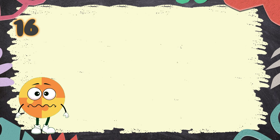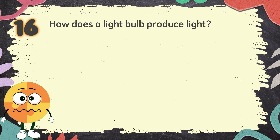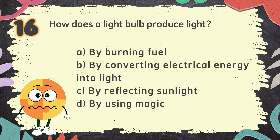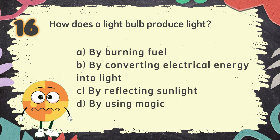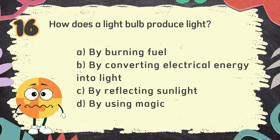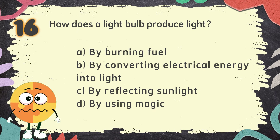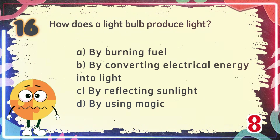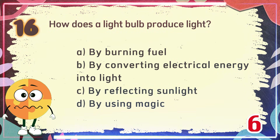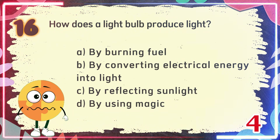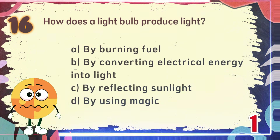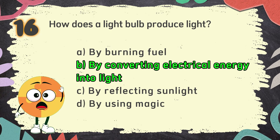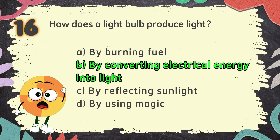Number 16. How does a light bulb produce light? The choices are: A. By burning fuel, B. By converting electrical energy into light, C. By reflecting sunlight, D. By using magic. The correct answer is B: By converting electrical energy into light.